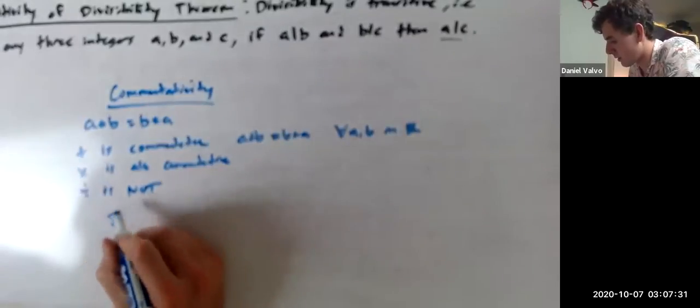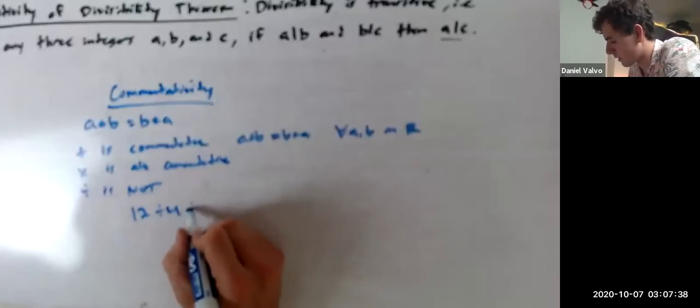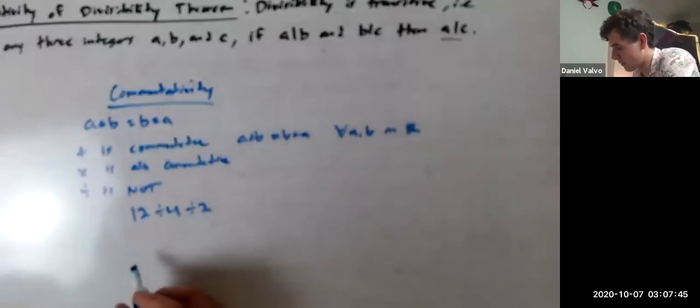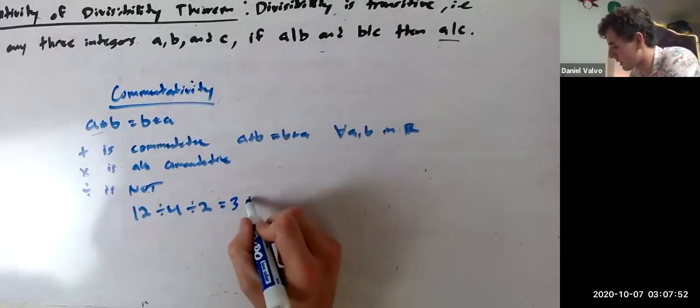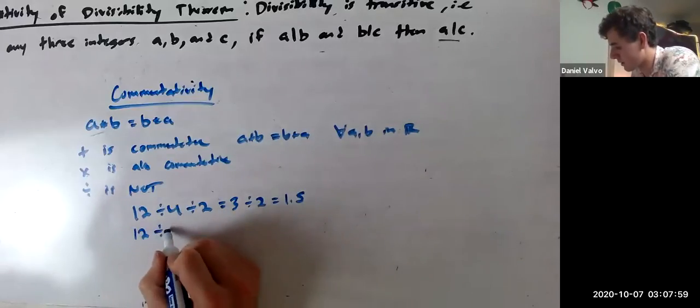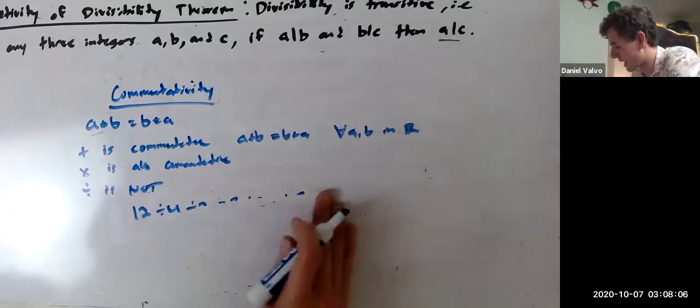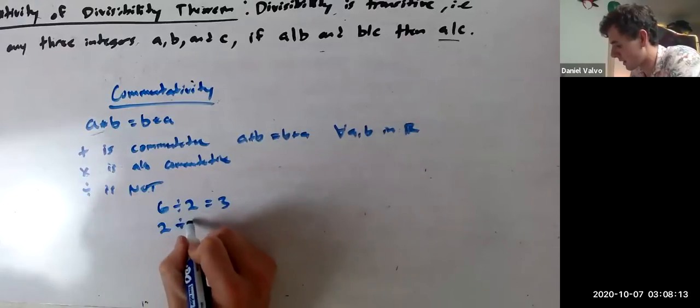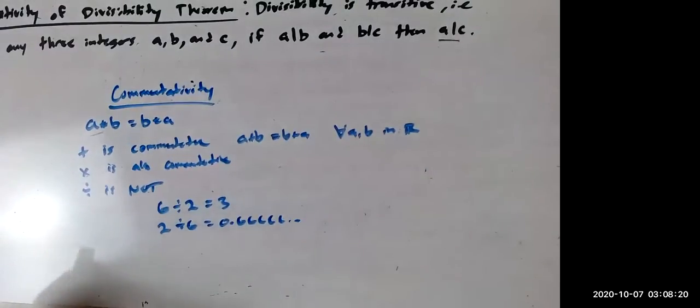Right? Because if we do, let's say we do 12 divided by 4 divided by 2. The order we do this in massively matters, right? This would technically be, we go left to right like PEMDAS says to do, 12 divided by 4, this would be 3 divided by 2, and 3 divided by 2 is 1.5. But if we do 12 divided by 2 divided by 4, I don't know why I had 3. I didn't need to do that. Actually, an easier way would just be that 6 divided by 2 equals 3.